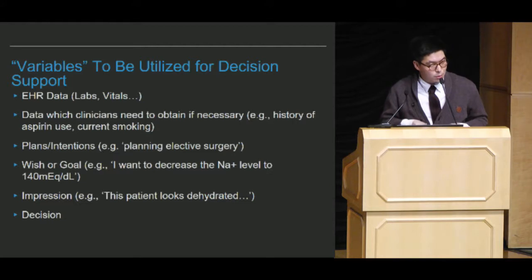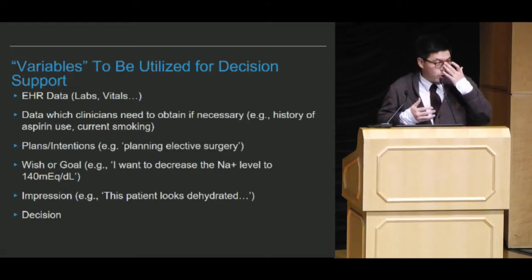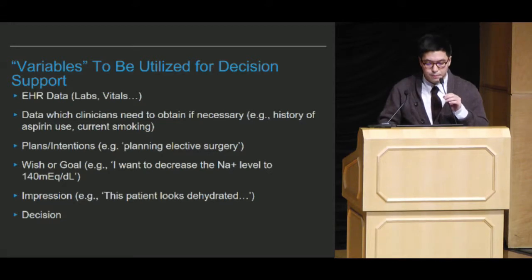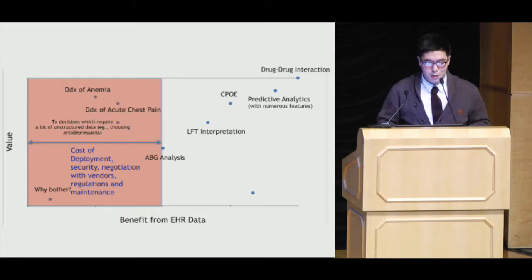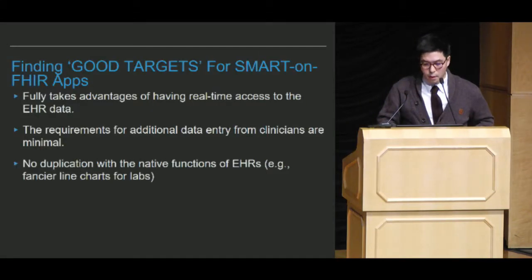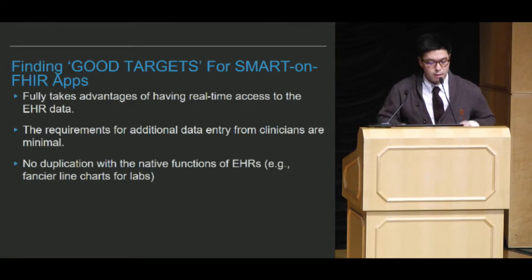There is some data doctors need to obtain to make decisions — like history of aspirin use, current smoking, whether they're planning certain surgery, what their goals are, what clinicians think in their mind, and whether the patient looks dehydrated — because if the patient looks dehydrated, you might want to suggest hydration with fluid administration. Developing and negotiating with vendors and dealing with FHIR regulation is not free, so the benefit needs to be enough to justify development. Our lesson: we decided not to make any duplication with native EHR functions, and the requirement for additional data entry from clinicians should be minimal, so we can have real-time access to EHR data and fully take advantage of it.